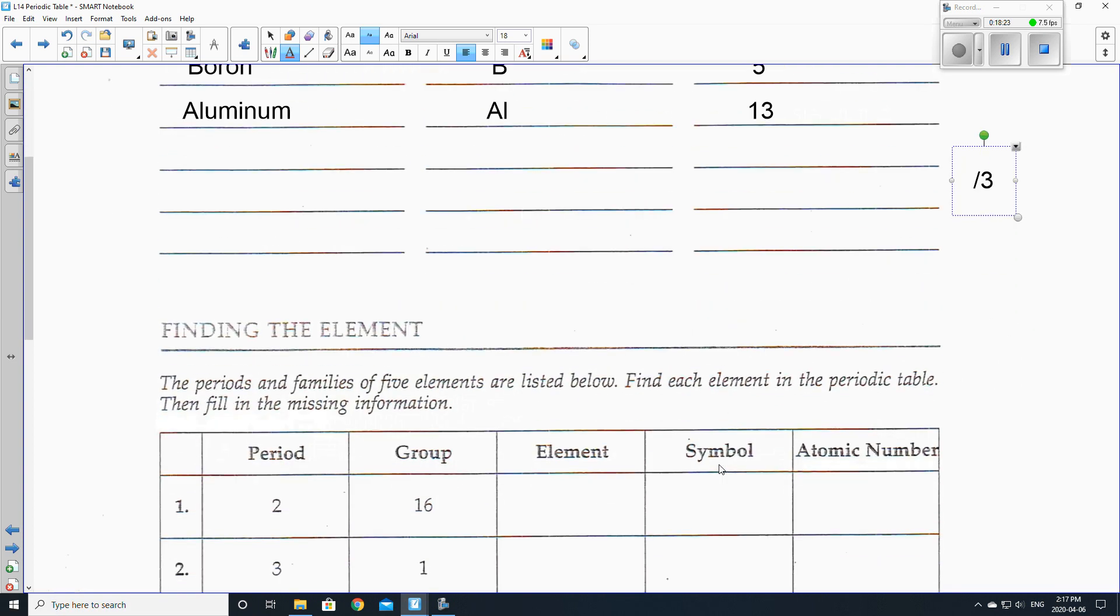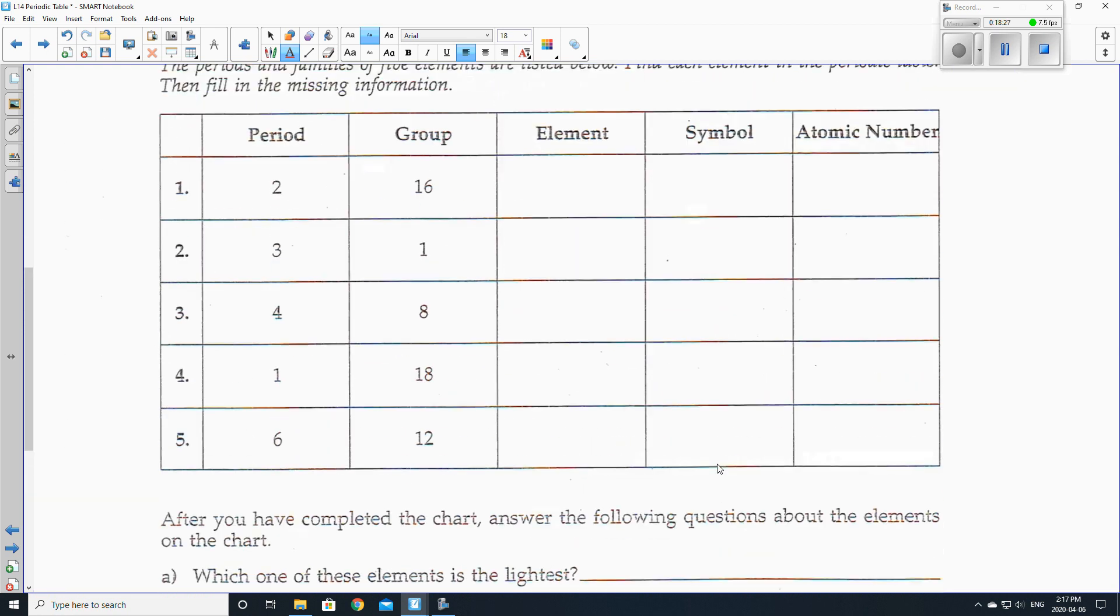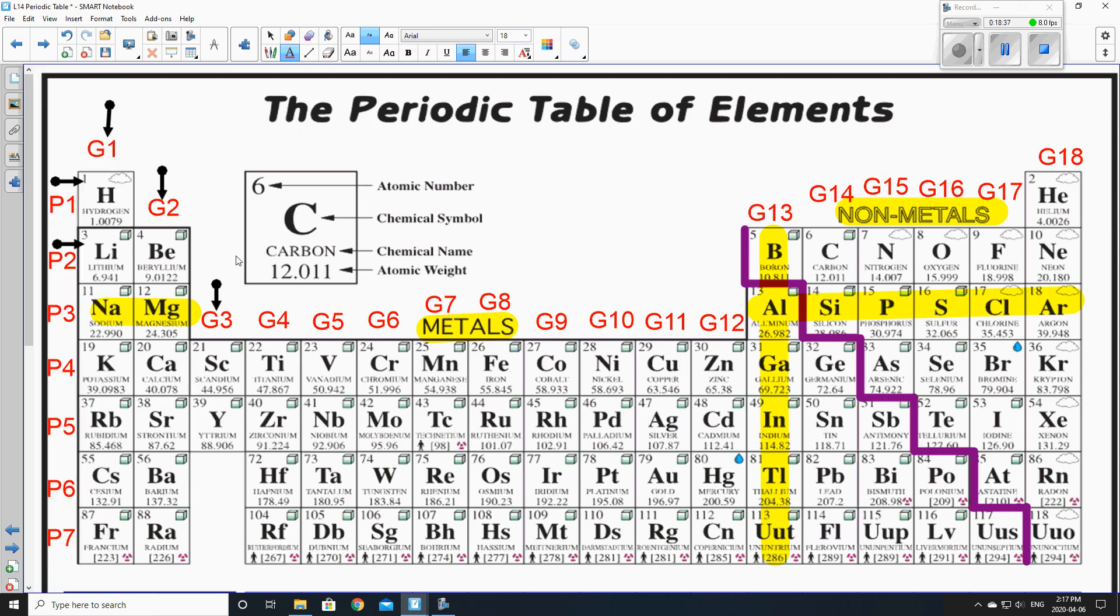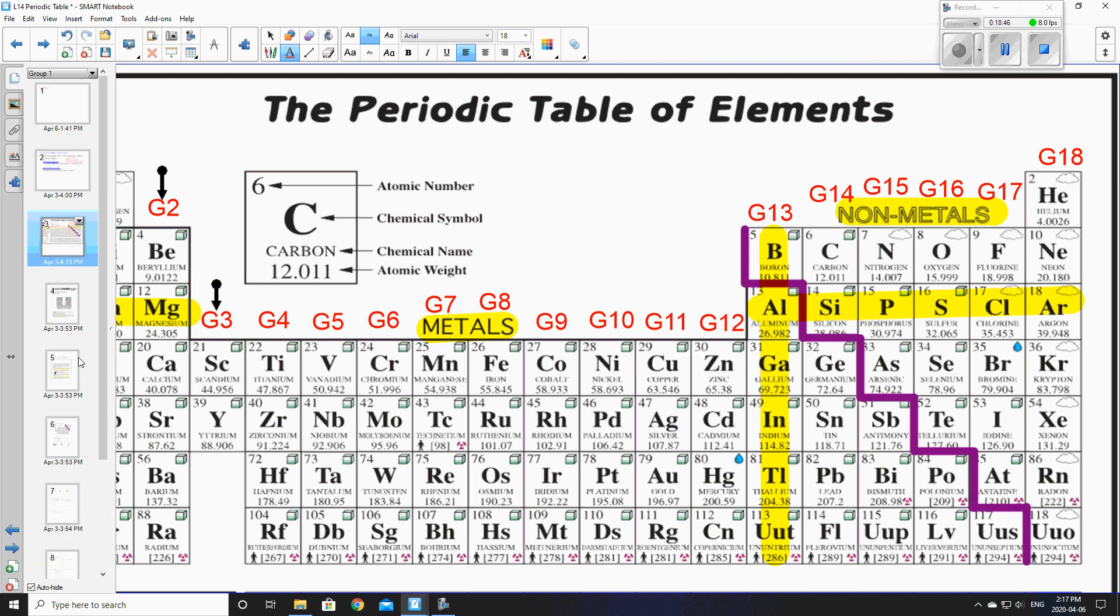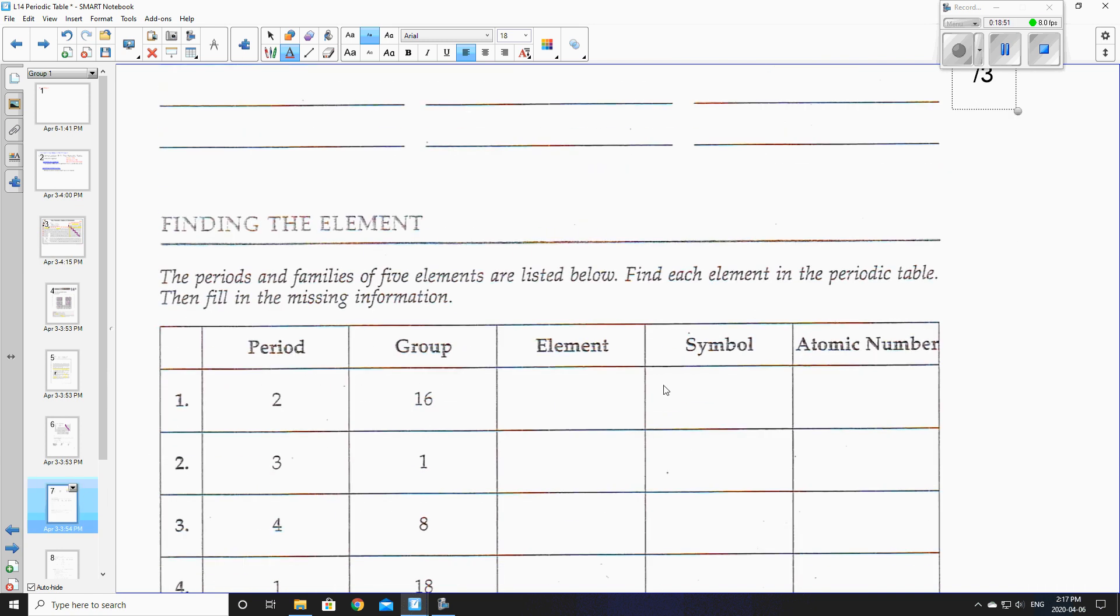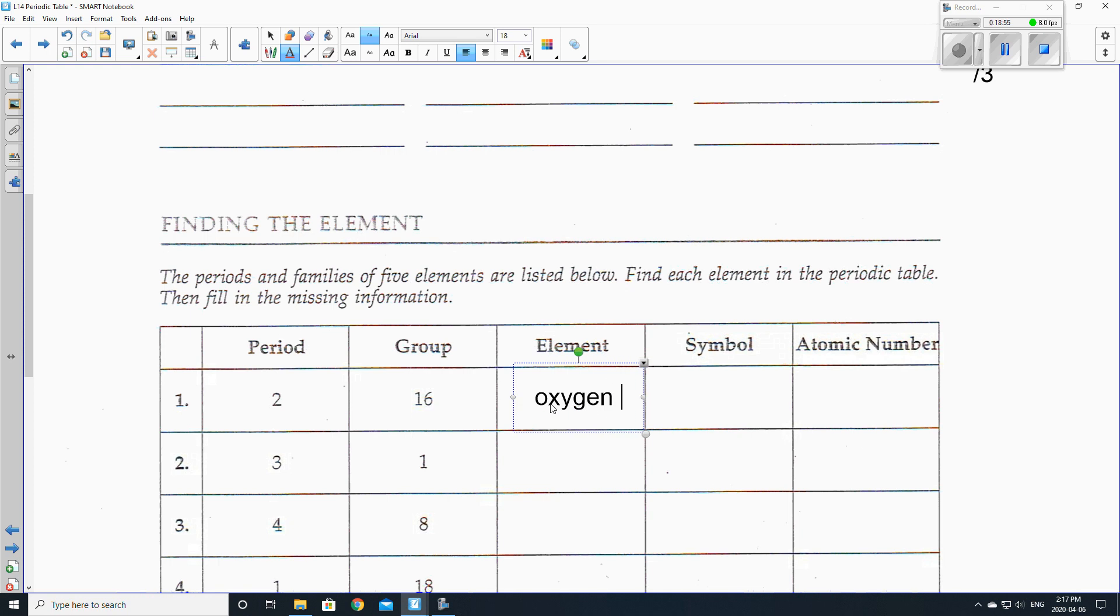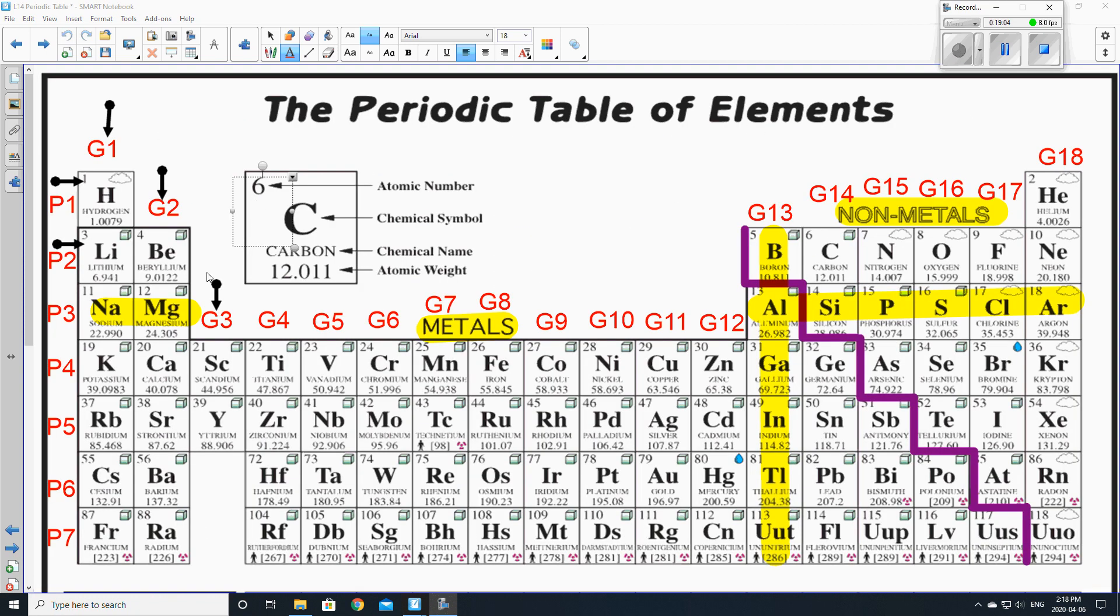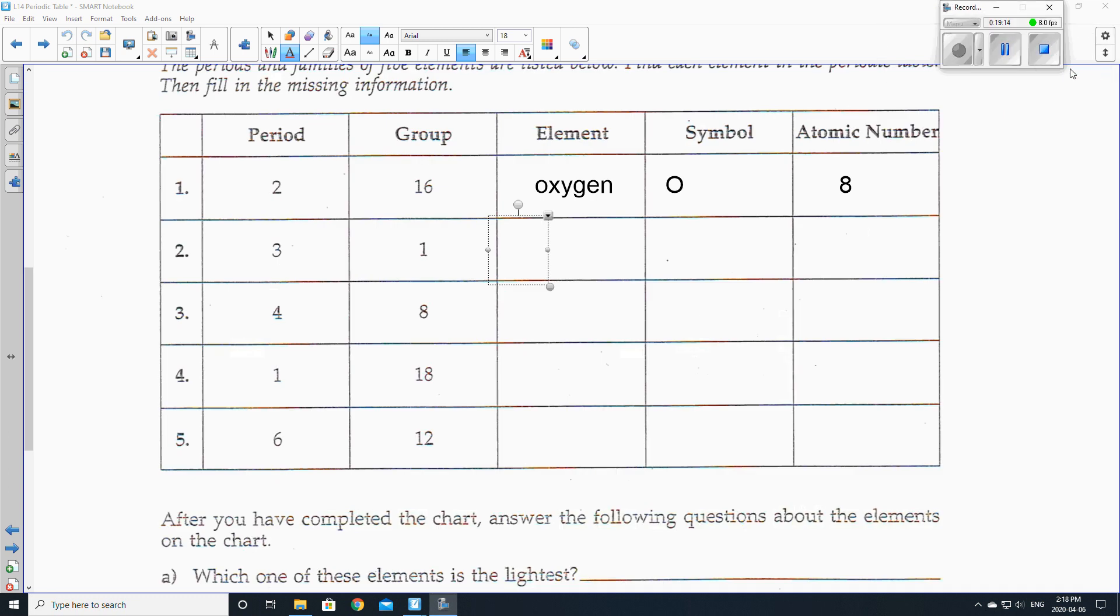So please pause the video if you need to, and you can finish that off. Now next up, let us just finish this off, and then that'll end this video right now. So period two, group 16. So we're going to look this up, period two, group 16. So period two is here, and then we're going to go across to group 16. There it is. It's oxygen, number eight. So the element was oxygen. The symbol was O. The atomic number is eight. Let's look up also period three, group one. So period three, group one. That's sodium, number 11. The symbol is Na. So sodium, Na, the atomic number was 11.